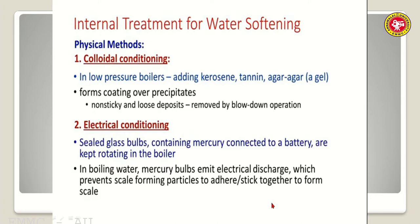Physical methods: Colloidal conditioning - in low pressure boilers, adding kerosene, tannin, or agar-agar (gels) causes them to stick with loose deposits of hardness-producing substances, which settle at the bottom and can be removed by blow-down operation. Electrical conditioning: sealed bulbs containing small amounts of mercury are connected to an electric charge; the mercury continuously emits electrical discharge, which prevents scale-forming particles from adhering to the inner surface of the boiler.